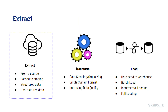Extraction: In the first step, data is extracted from a source — for example, Salesforce, Google Adwords, etc. — into a staging area. The staging area acts as a buffer between the data warehouse and the source data. Since data may be coming from multiple different sources in various formats, directly transferring the data to the warehouse may result in corrupted data. The staging area is used for data cleansing and organization.